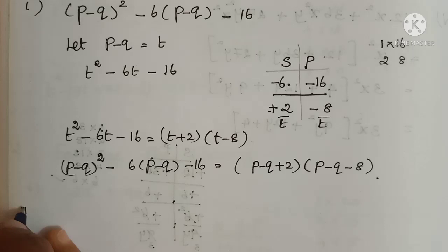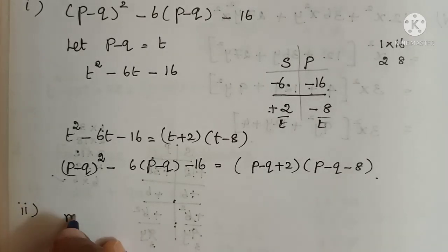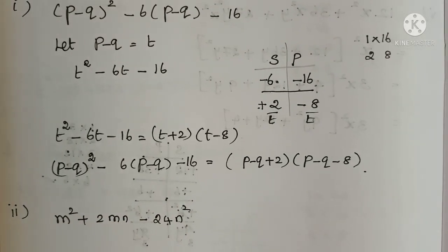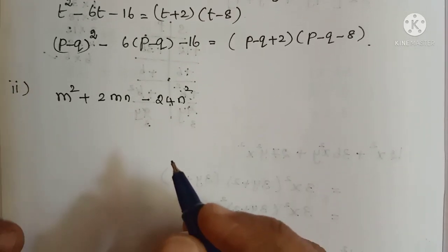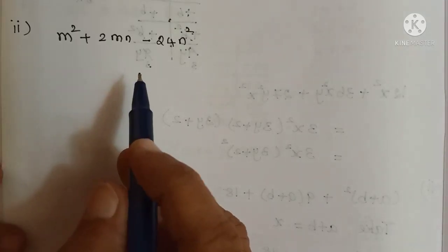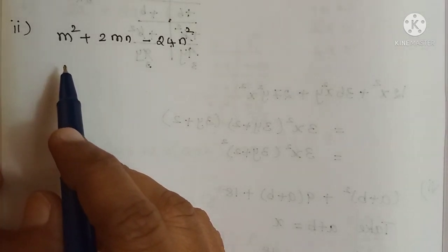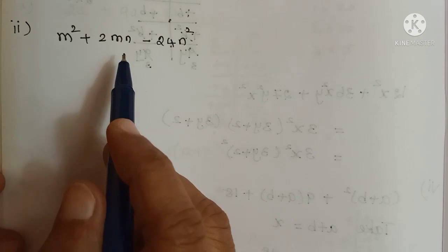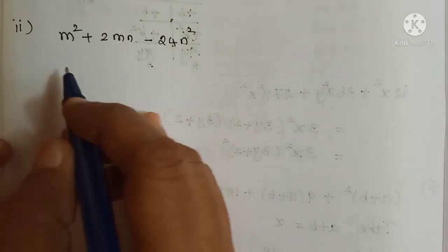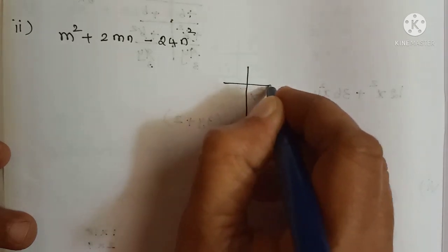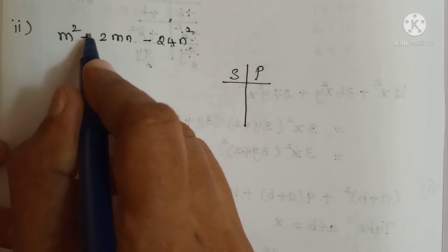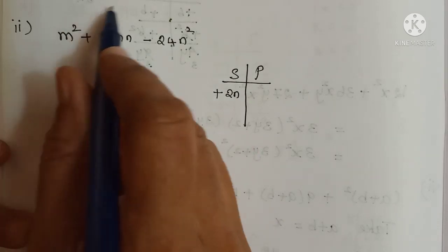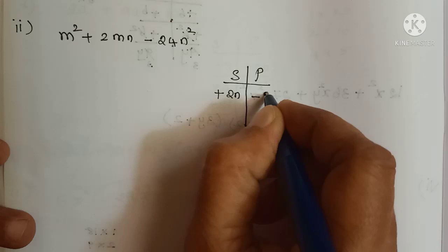Now we will see the second sum. The question is: m squared plus 2mn minus 24n squared. We are going to take one letter as a variable and another as a constant. In this problem, m is the variable and n is the constant. Coefficient of m squared is 1, so directly we can use sum-product. Sum place: coefficient of m is plus 2n. Product place: 1 into minus 24n squared gives minus 24n squared.